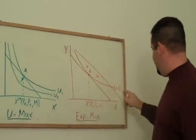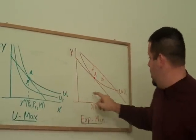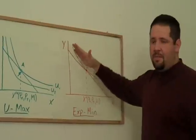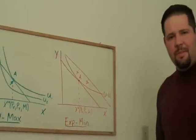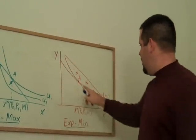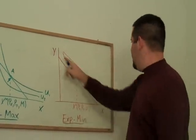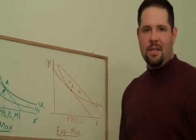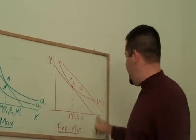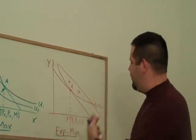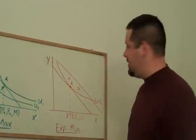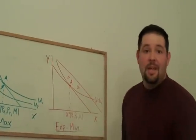But intuitively, if we have the same utility level U1 as we have over here, we minimize the expenditures, we're just going to get a tangency between what looks like a budget line. This is going to be our expenditures, our iso-cost line that looks like a budget line, and it's the same indifference curve. So if these two graphs represent the same preferences, we're going to end up in the same spot.